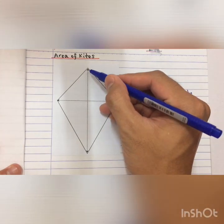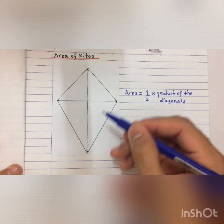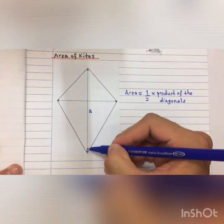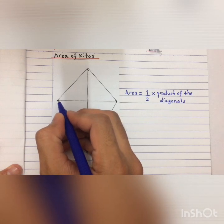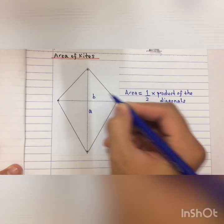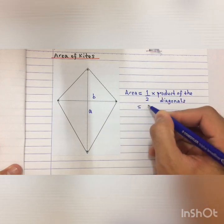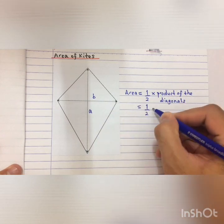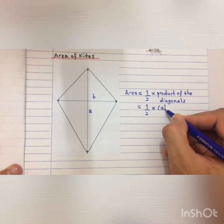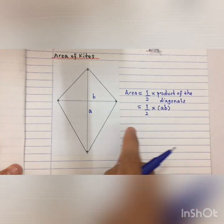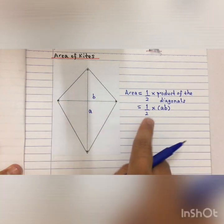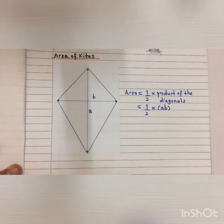If I label from this vertex going to this vertex as A, the length will be A. And then from this vertex going to this vertex, the length will be B. So to find the area it is simply 1/2 times A times B. So you multiply the length of the diagonals — A times B — and then divide by 2. This is the area of a kite.